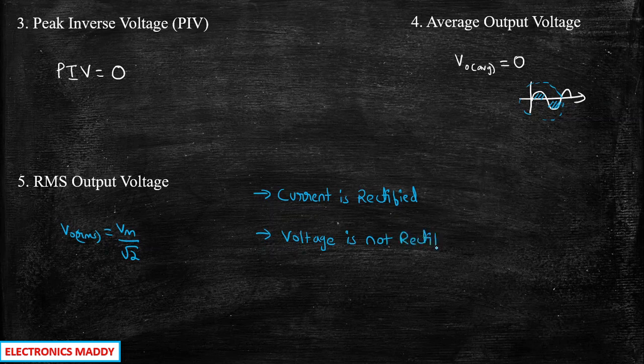So as a conclusion: current is rectified whereas voltage in the circuit is not rectified — it follows the input signal. This is how you analyze a half-wave rectifier with inductive load. In case you have any questions, feel free to type them in the comment section below. Thanks for watching. Keep supporting.